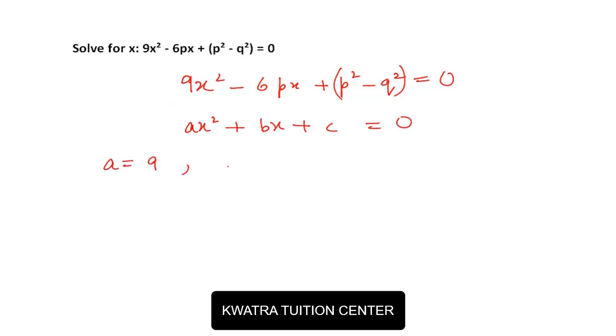So you can see the value of a in this case is 9, b in this case is -6p, and c in this case is p² - q².